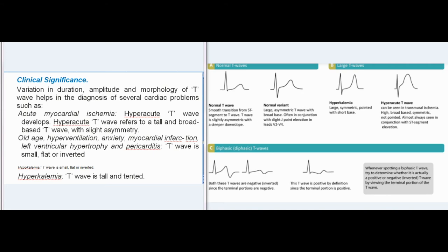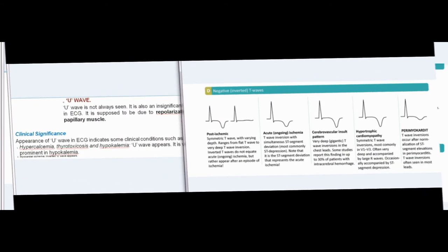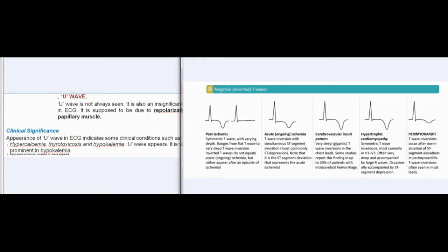Hyperkalemia — T-wave is tall and tented. U-wave: U-wave is not always seen; it is an insignificant wave in ECG. It is supposed to be due to repolarization of papillary muscle. Clinical Significance: Appearance of U-wave indicates conditions such as hypercalcemia, thyrotoxicosis, and hypokalemia (U-wave is very prominent in hypokalemia). Myocardial ischemia — inverted U-wave appears.